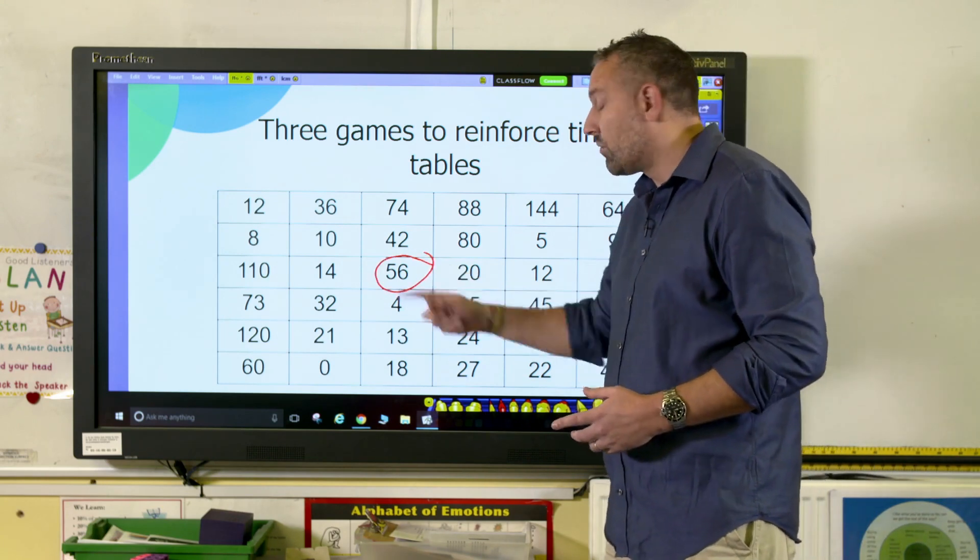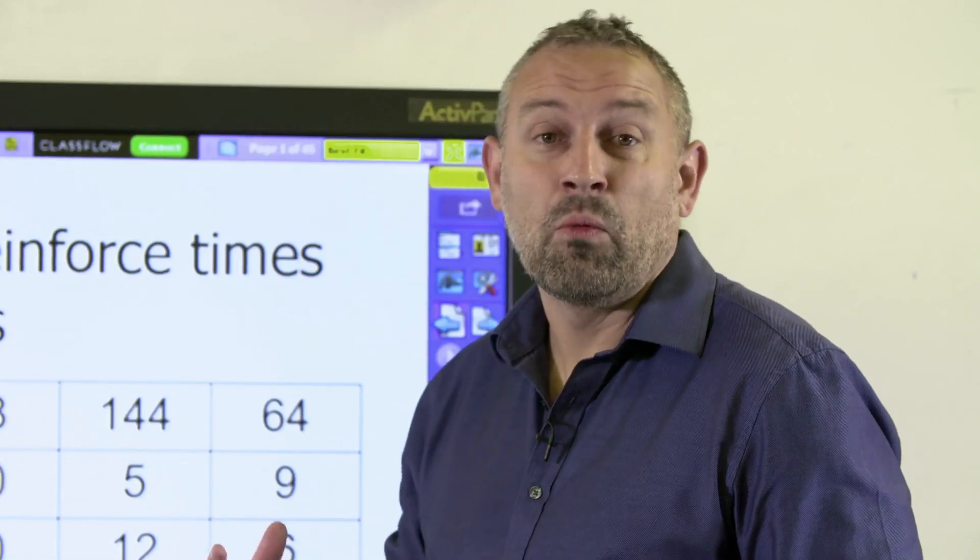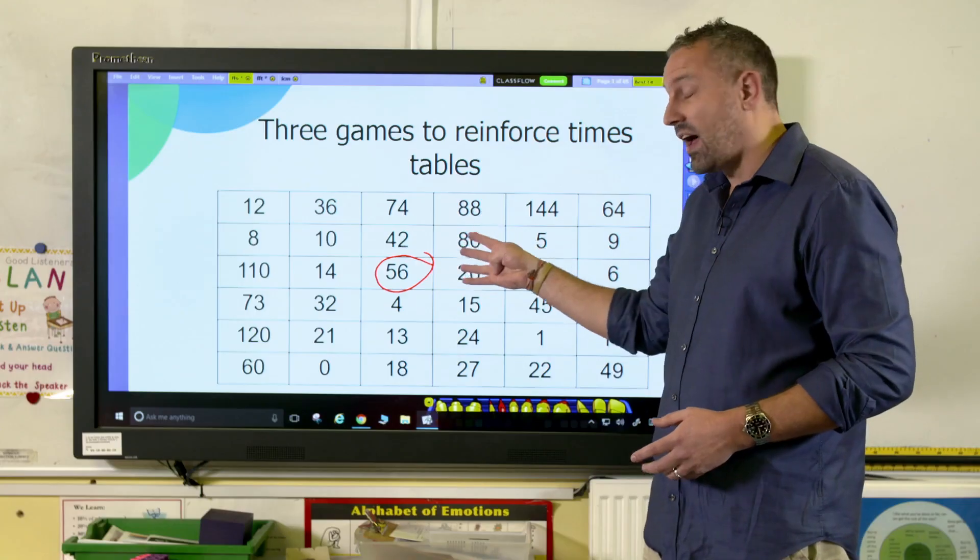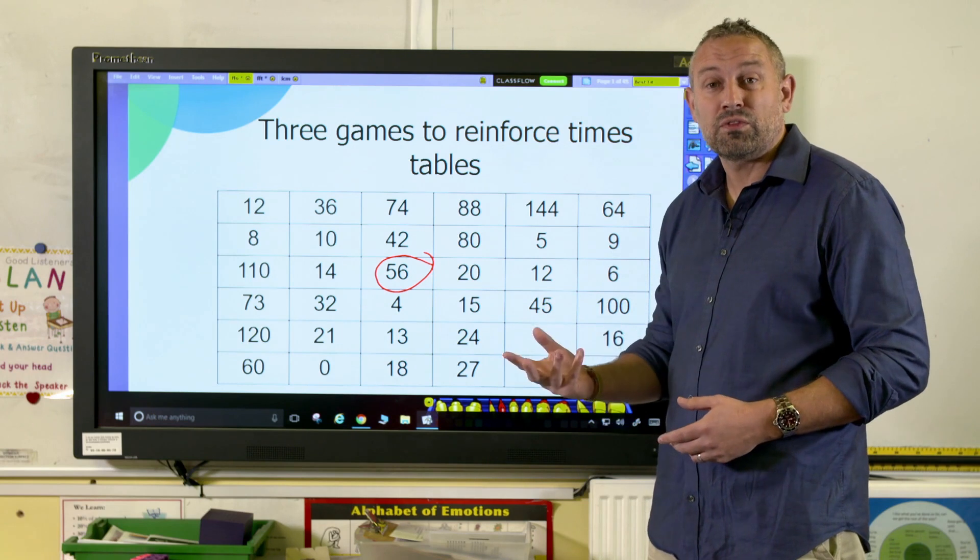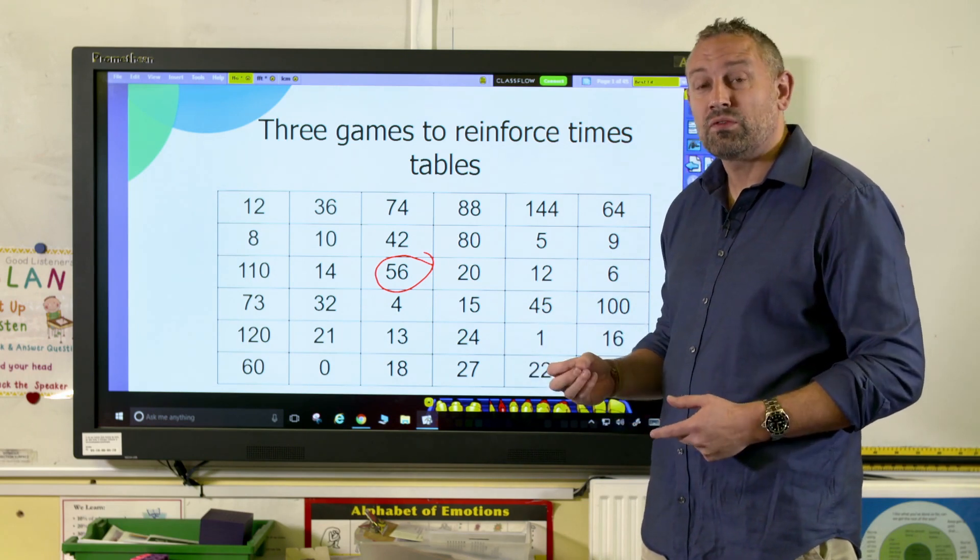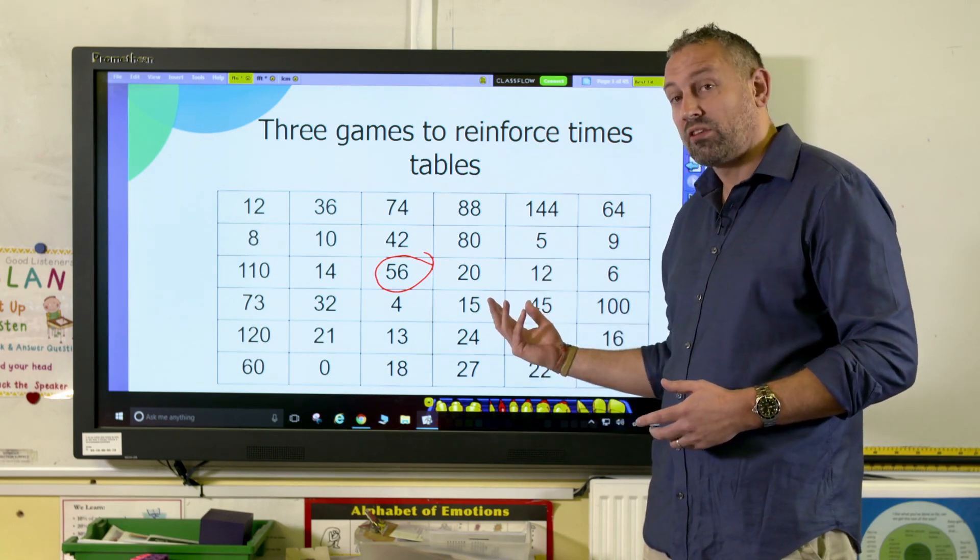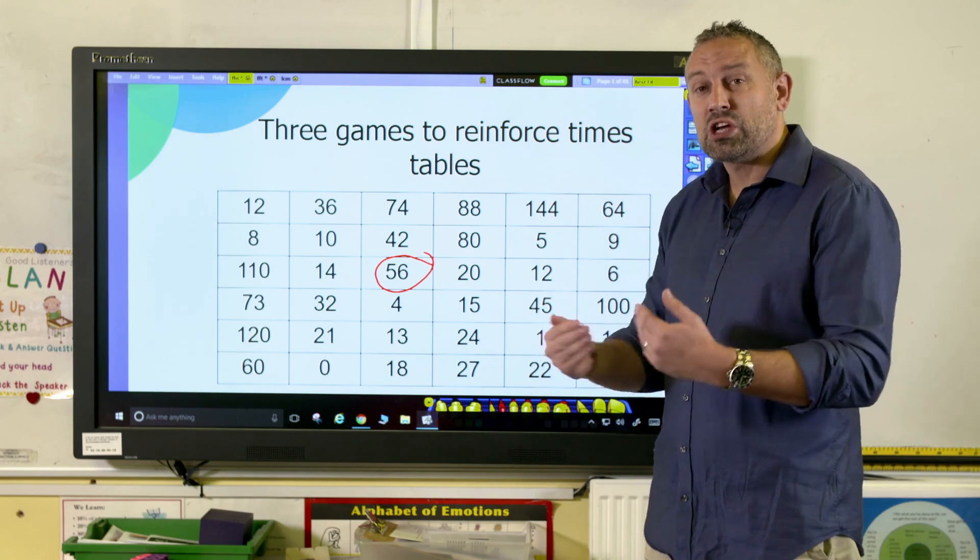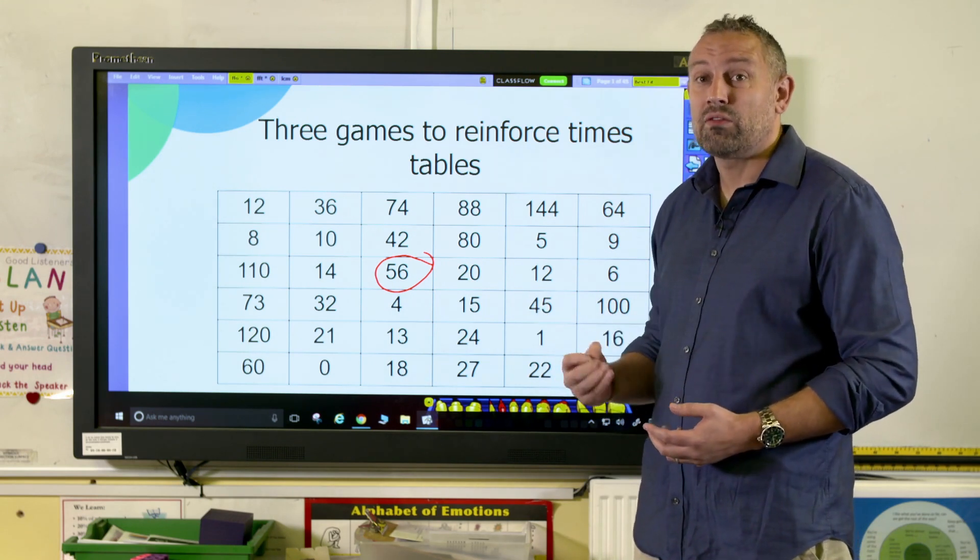What they have to do is they have to say a number times table sentence together to equal that answer. So they could say two times 28 equals 56, or seven times eight equals 56. And then their partner has a go, and it's good to be able to check and challenge each other on this to really reinforce it.